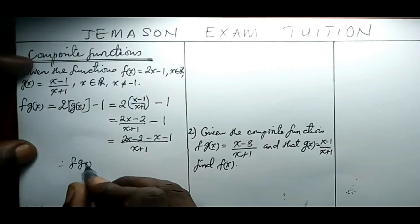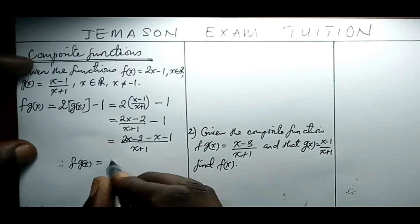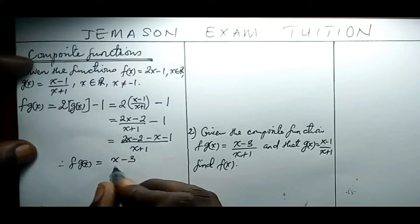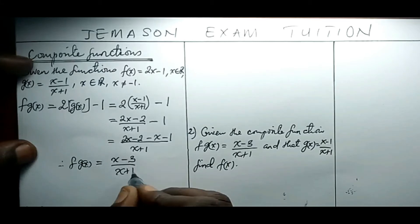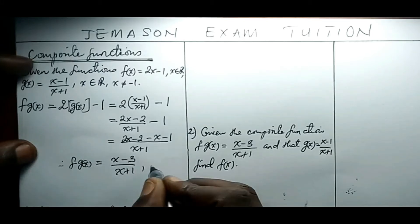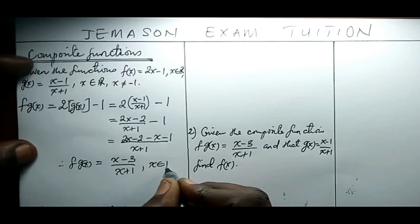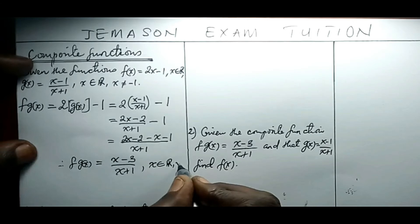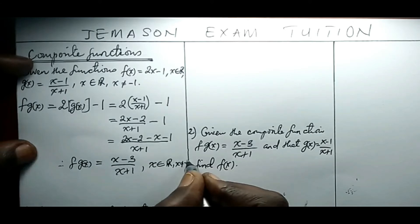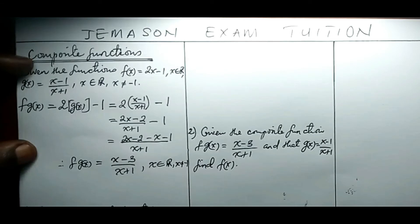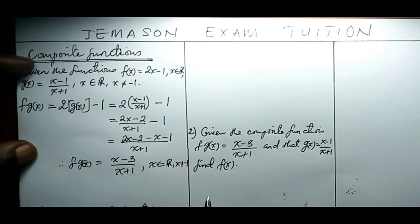Therefore fg of x equals x minus 3 all over x plus 1, and this is defined for real numbers except negative 1. That is the composite function.